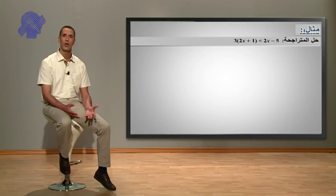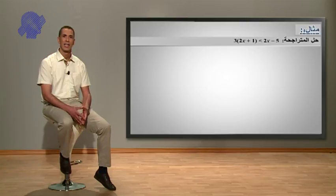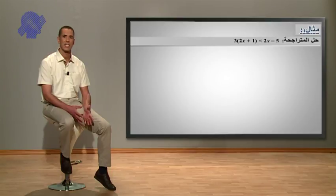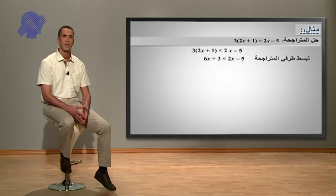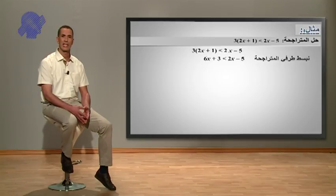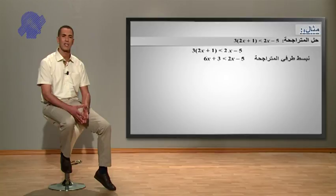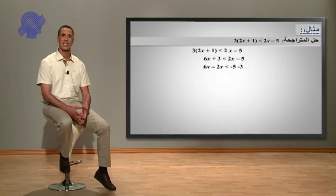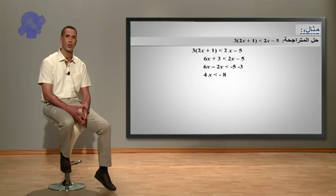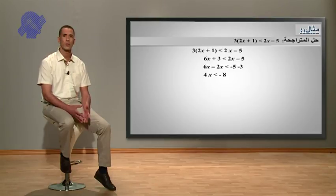لدينا هذا المثال: حل المتراجحة 3 مضروبة في (2X زائد 1) أصغر تماما من 2X ناقص 5. أولا نبسط طرفي المتراجحة لتصبح 6X زائد 3 أصغر تماما من 2X ناقص 5. الآن: 6X ناقص 2X أصغر تماما من ناقص 5 ناقص 3، نجعل الطرف الأول مجهولا والثاني معلوما.